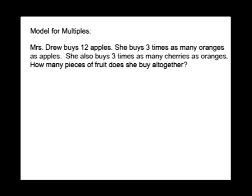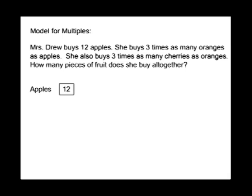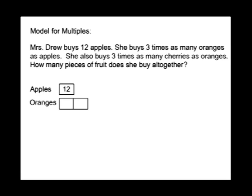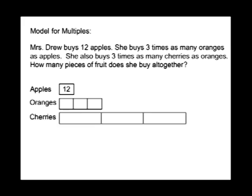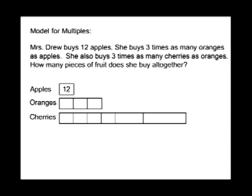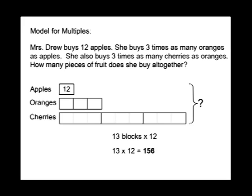In this example, we're going to do a model for multiples. Mrs. Drew buys 12 apples. She buys three times as many oranges as apples, and three times as many cherries as oranges. Our apples represent 12. We represent three times the oranges and separate each into three parts in terms of apples. We have a total of 13 blocks times 12, and 13 times 12 equals 156. She buys 156 pieces of fruit altogether.